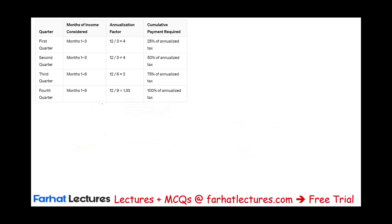Here is the formula we will use. For the first quarter — January, February, and March — you take your income from that period, multiply it by the annualization factor of 12 divided by 3, which equals 4, to figure out your annual income. Then you compute the tax on that annual income and pay 25%.